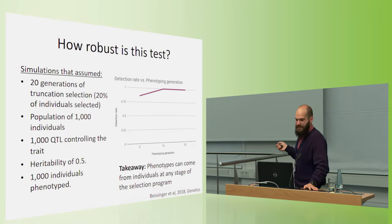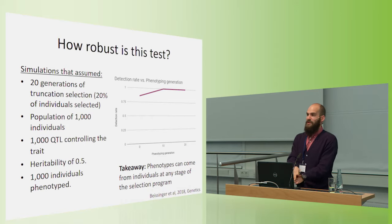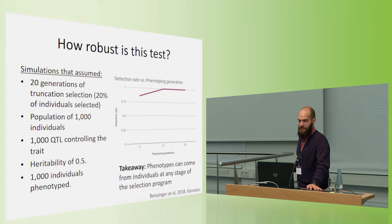Finally, or not quite finally, we can do selection at, or we can use phenotypic information from any generation of the selection program. So if phenotypes are available before selection began, we can implement the genomic prediction test to estimate effect sizes using that pre-selection material. If they're available after selection, we can use the post-selection material, and it doesn't make a huge difference on the power of the test.